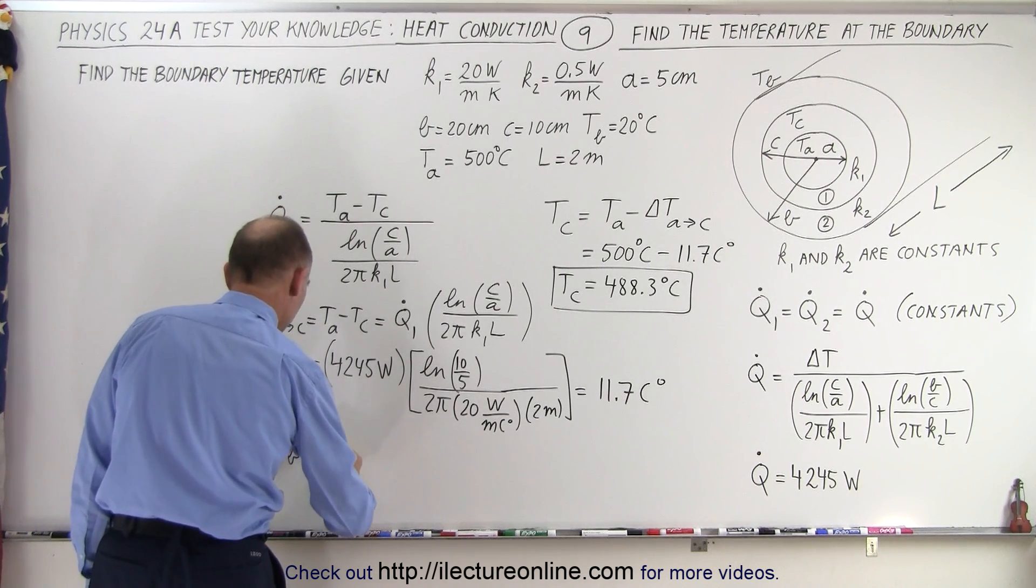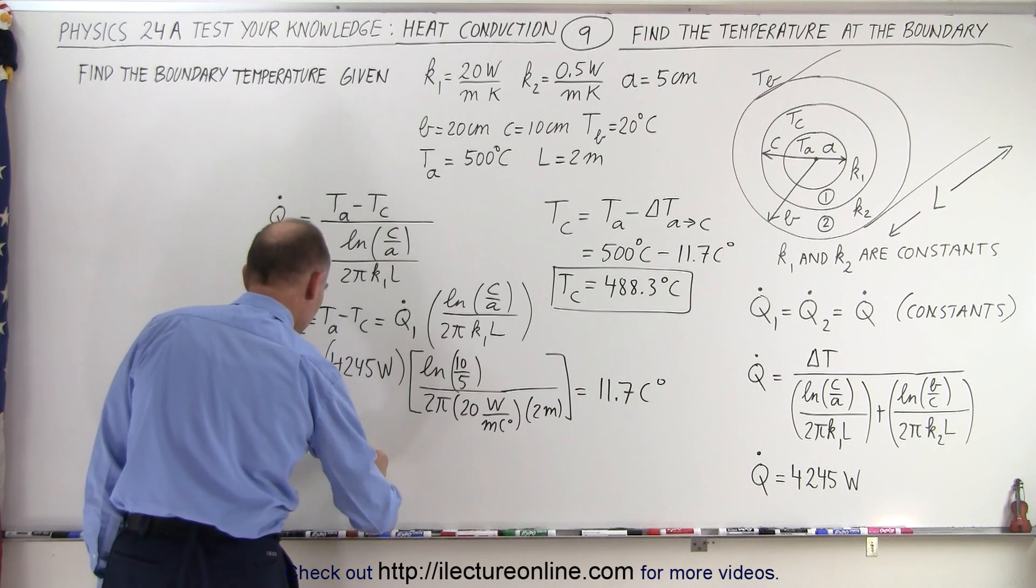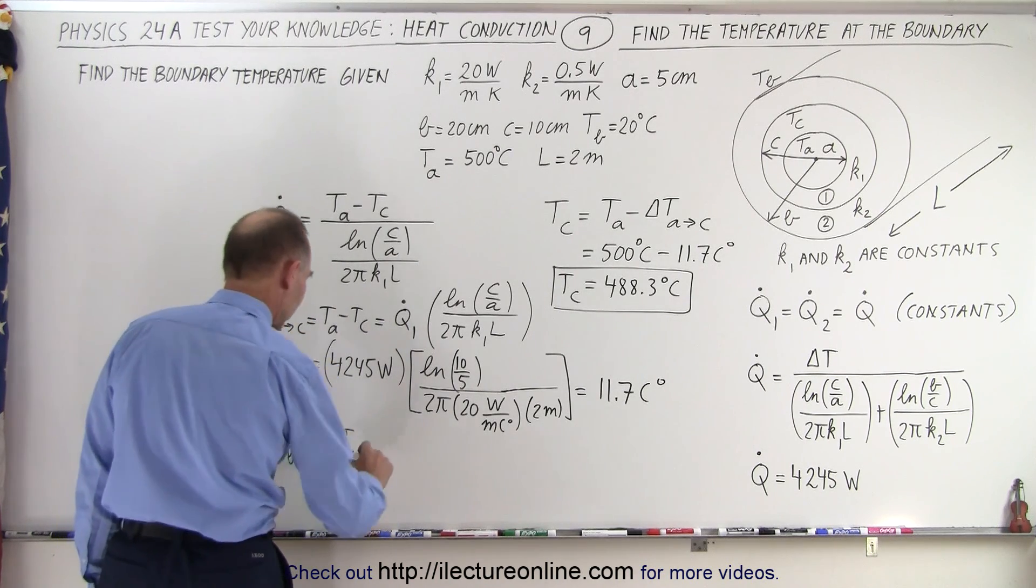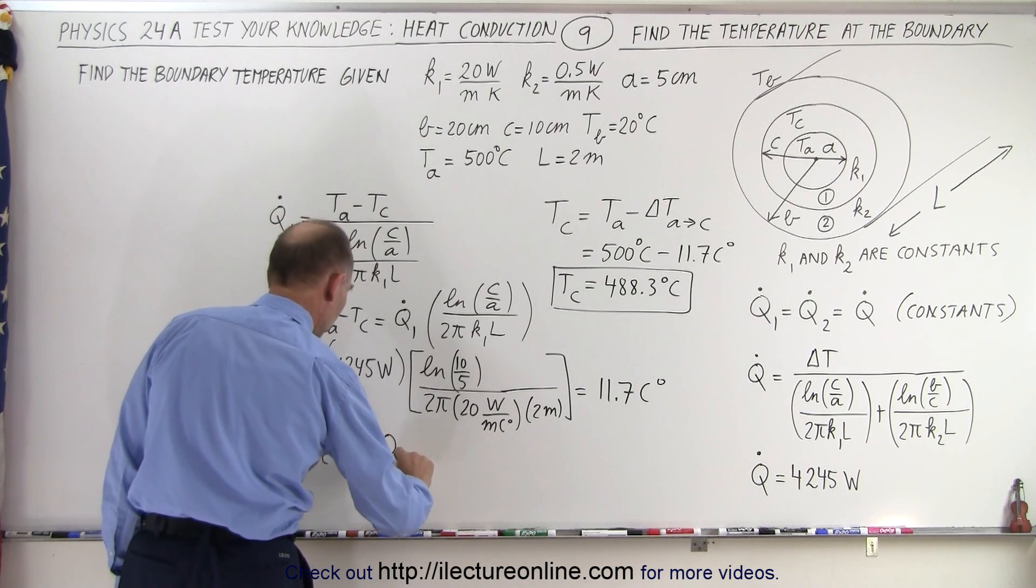Is going to be equal to, that would be T_C minus T_B, the boundary temperature minus the outside temperature, which is equal to Q2 dot.